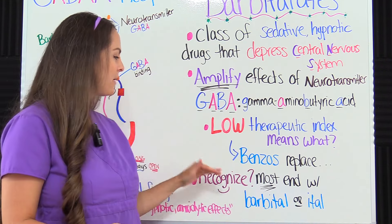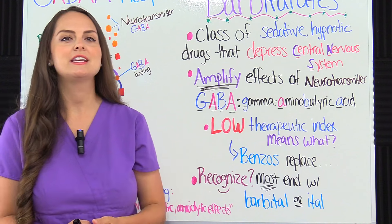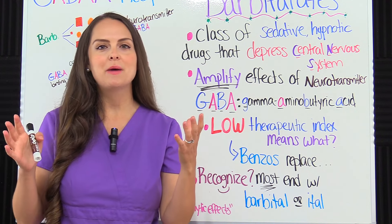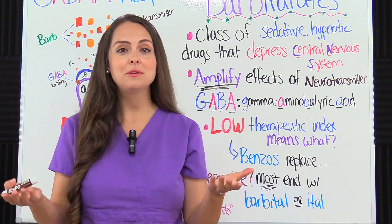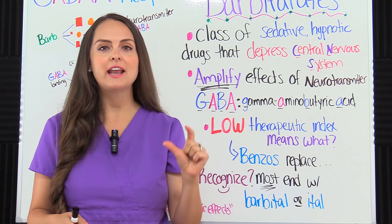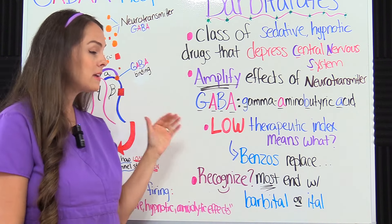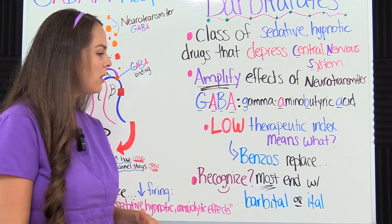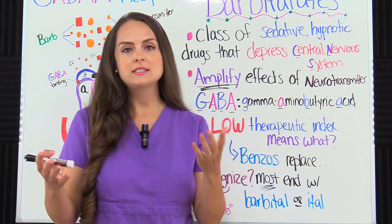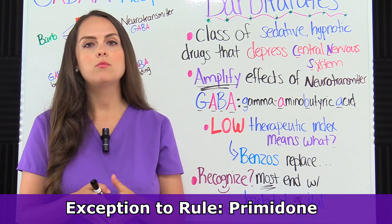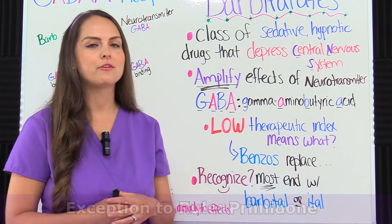How can you recognize these drugs as a nurse? When you look at a patient's medication list, look at the end of the generic name — most barbiturates will end in -barbital or -ital, with the exception of primidone, which is used to treat seizures and does not follow that rule.